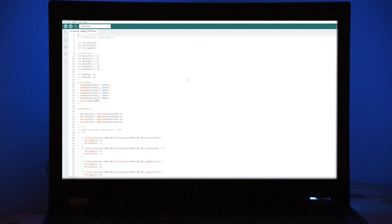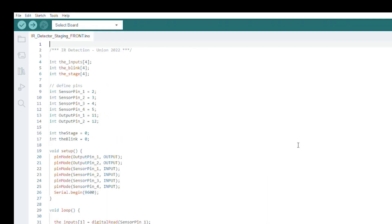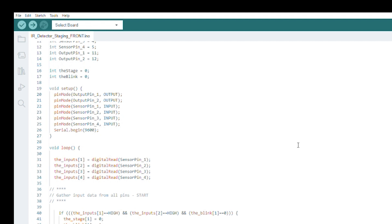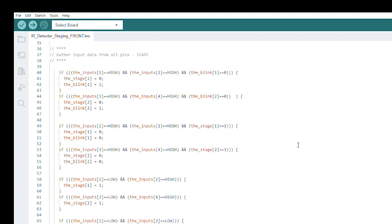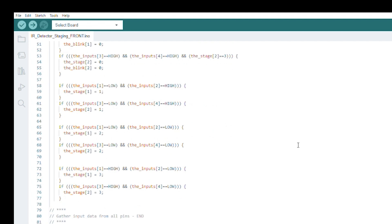The software programming is straightforward. I defined a series of variables that would capture the state of the IR detectors, as well as the stages of the detection sequence. Running within the software loop, the first block of code records the state of each of the detectors and records that information to the corresponding array value.